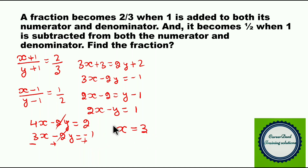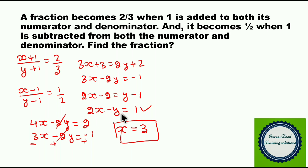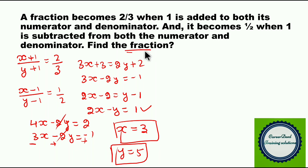Now substitute x equals 3 into the second equation: 2 times 3 is 6, and 6 minus y equals 1, so y equals 5. The fraction is x by y, which is 3 by 5. If your answer is 3 by 5, you are correct.